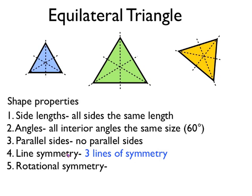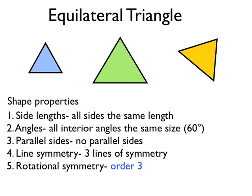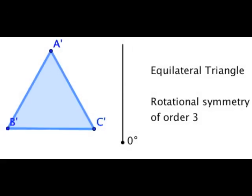Equilateral triangles have three lines of symmetry, and you can see I've drawn them on in dashed lines here. If you put a mirror on one of those dashed lines and looked into it, the reflection you would see would be what's actually drawn on the page. So equilateral triangles have three lines of symmetry. They also have rotational symmetry of order three. Let's have a look at the rotational symmetry of equilateral triangles and see why.